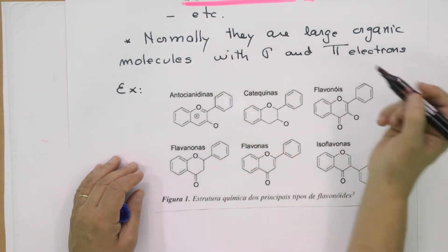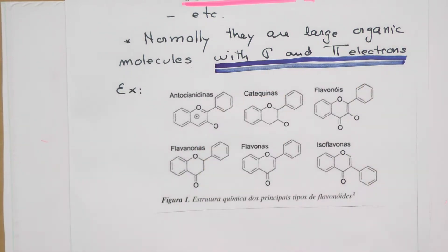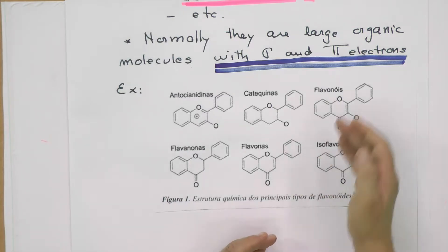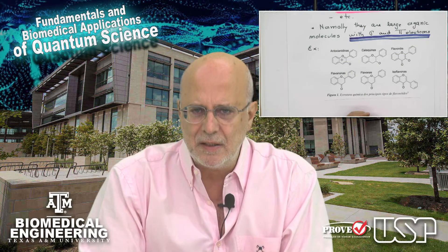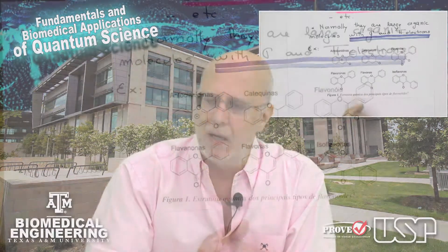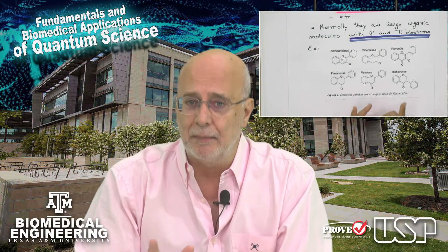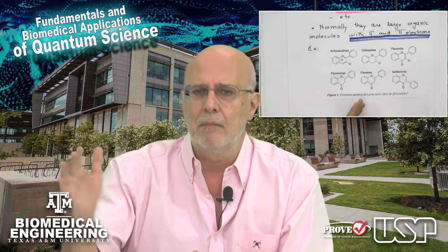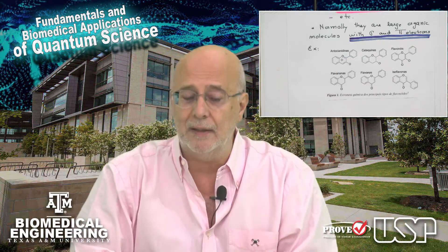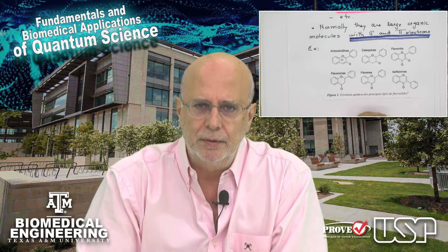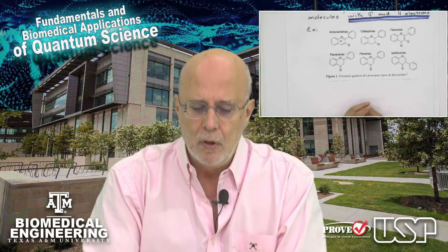Large molecules have what we call sigma and pi electrons. Sigma electrons make the covalent bonds. Pi electrons make the double bonds. While sigma electrons are very localized — keeping the nuclei bonded — pi electrons in some configurations can move, creating a delocalized electron cloud. That delocalization is important for the interaction of the molecule with electromagnetic radiation, and it can be calculated using simple quantum models.